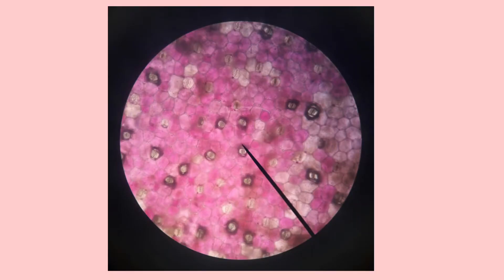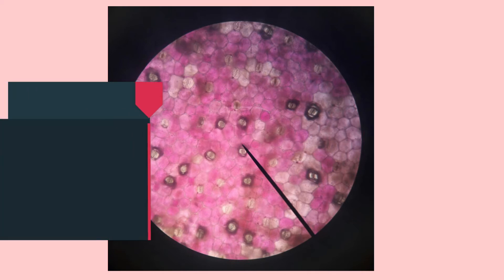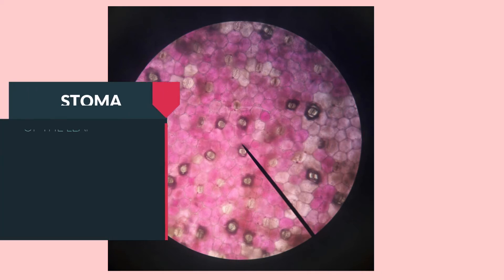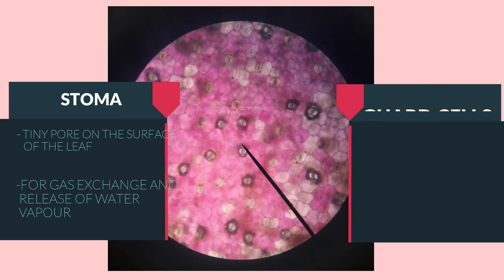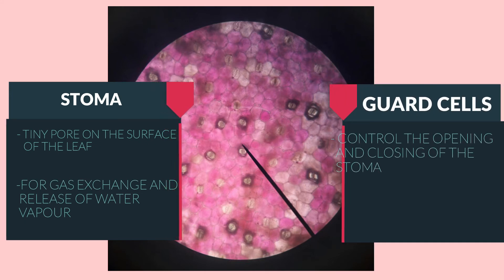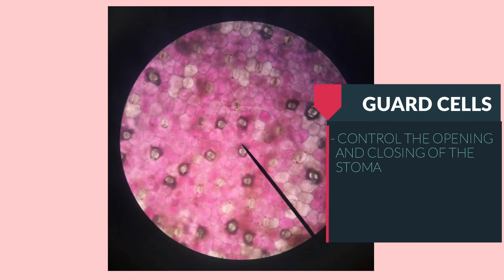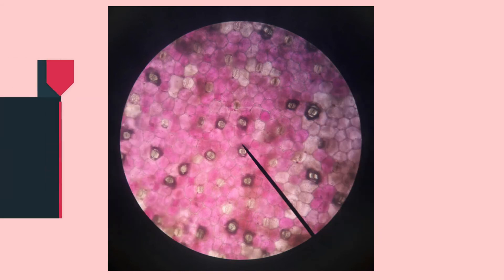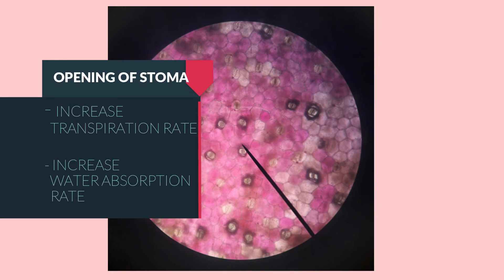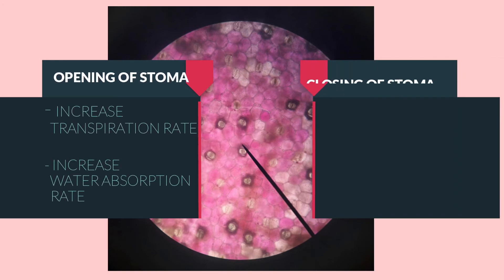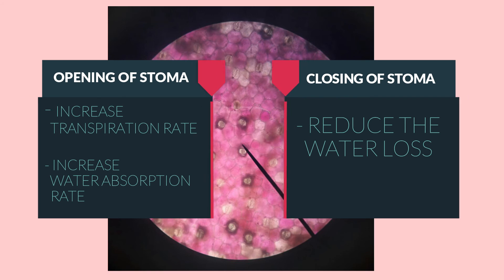A stoma is a tiny pore on the surface of the leaf and is used for gas exchange and absorption of water vapor. A stoma is located between a pair of cells called the guard cells. The guard cells control the opening and the closing of the stoma. The opening of the stoma increases the transpiration rate and the rate of water absorption, while the closing of the stoma reduces water loss.